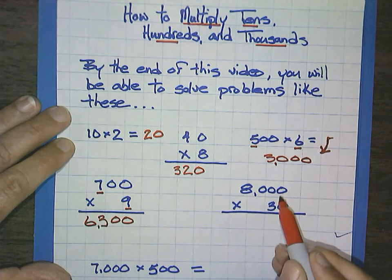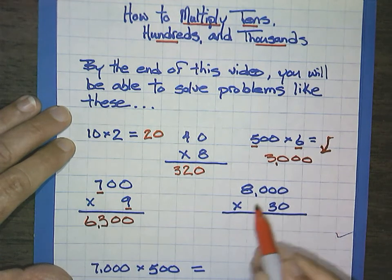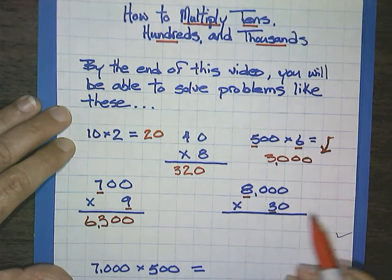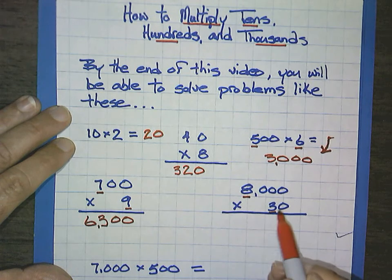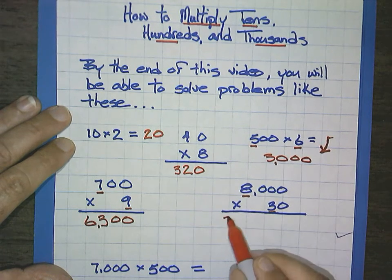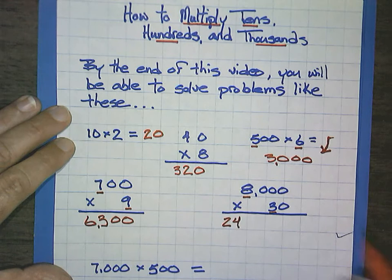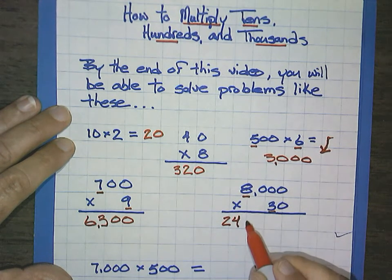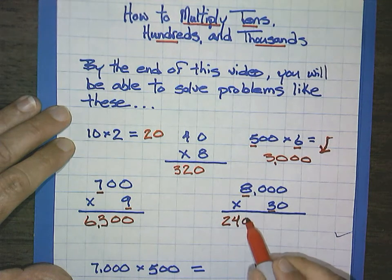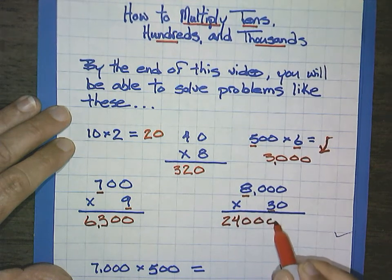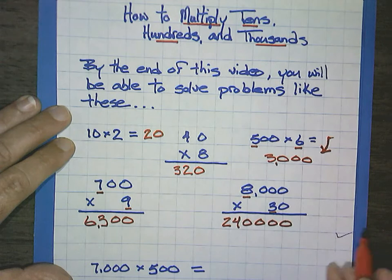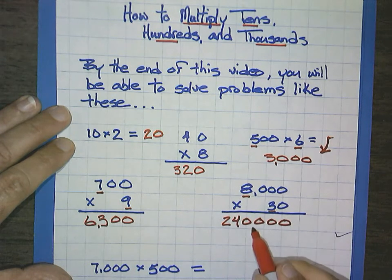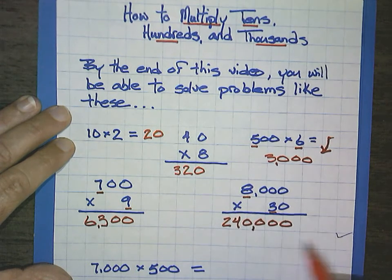8,000 times 30. I'm going to multiply my 8 times 3 is 24, and I'm going to count my zeros, 1, 2, 3, 4. So I'm going to write four zeros, 1, 2, 3, 4. I'm going to put in my separators every three digits for 240,000.